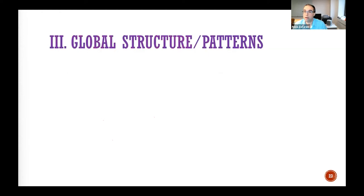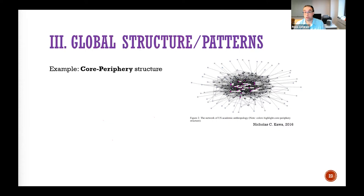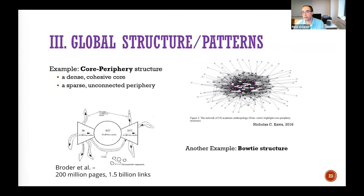Finally, you can use the global structure to represent your graph. For example, if your graph has a core-periphery structure — a dense core and a sparse periphery — you output that value as your representation. You can also look for a bow-tie structure or other patterns. All of these are ways to hardwire interpretability into your representation.